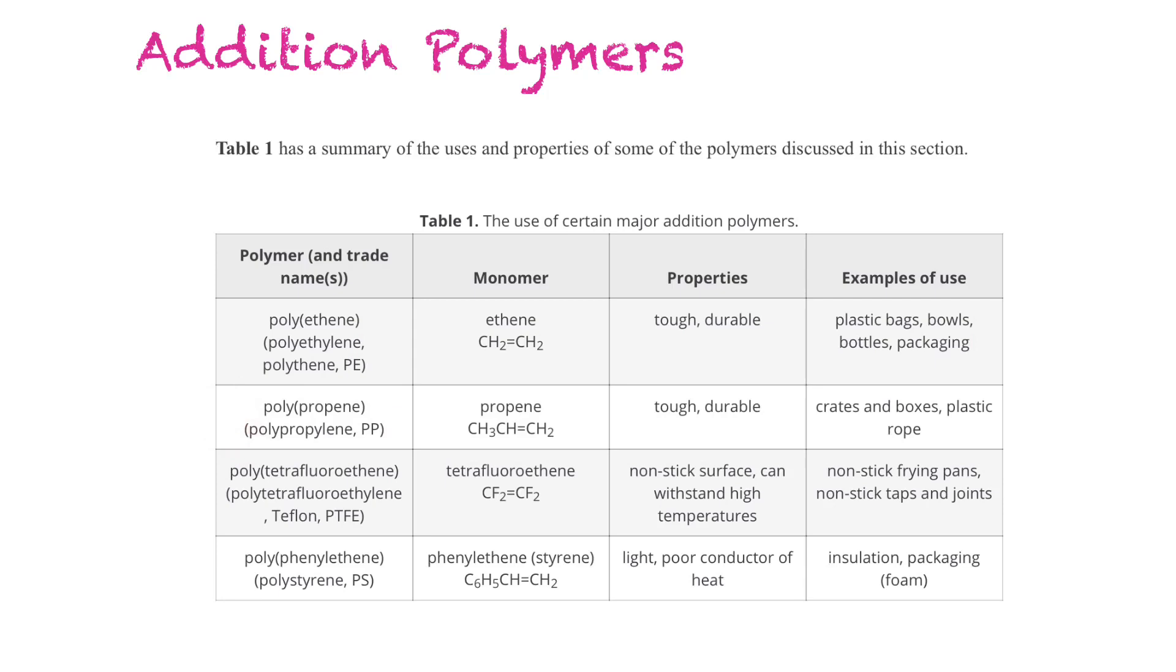Polypropene or polypropylene is made from propene. It's also tough and durable. We use this more in crates and boxes and plastic rope. This one is Teflon, polytetrafluoroethene. It's a good non-stick surface, so it can withstand high temperatures too. So non-stick frying pans and non-stick taps and joints would be examples. And then polyphenylethene is polystyrene. We know it as insulation, packaging, and so on because it's light, but it's a poor conductor of heat. So that means that you can pour a hot beverage into a styrofoam cup, and you're not going to burn your hand. The heat's not going to transfer through.